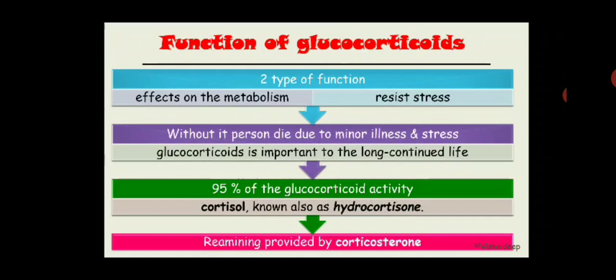This is very important once we discuss the deficiency of different enzymes in the applied aspect. Cortisol is the end product of the glucocorticoid pathway responsible for 95% of glucocorticoid activity. Corticosterone, the intermediate product of the mineralocorticoid pathway, accounts for the remaining activity. For example, in 11-hydroxylase deficiency, corticosterone can still be produced, leading to higher glucocorticoid activity — something we discuss when covering 21-hydroxylase or 11-hydroxylase enzyme deficiency.